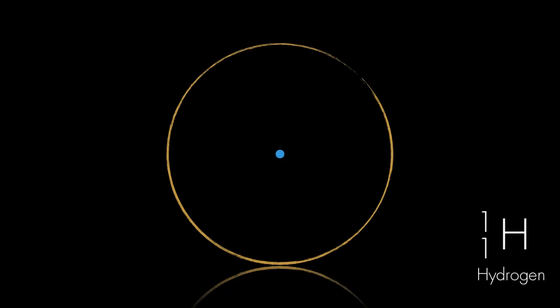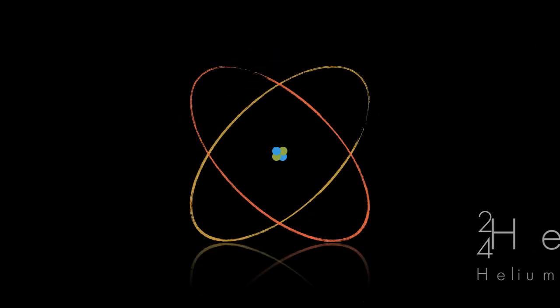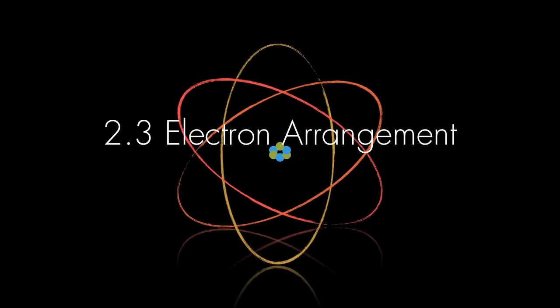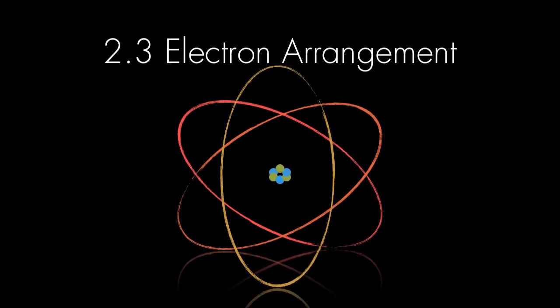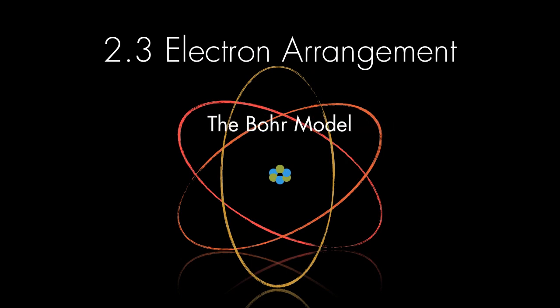This video is for the third subtopic of atomic structure, 2.3 electron arrangement. In this subtopic, we discussed the Bohr model of the atom, and in support of that model, we also discussed the phenomena of emission spectra and ionization energies.